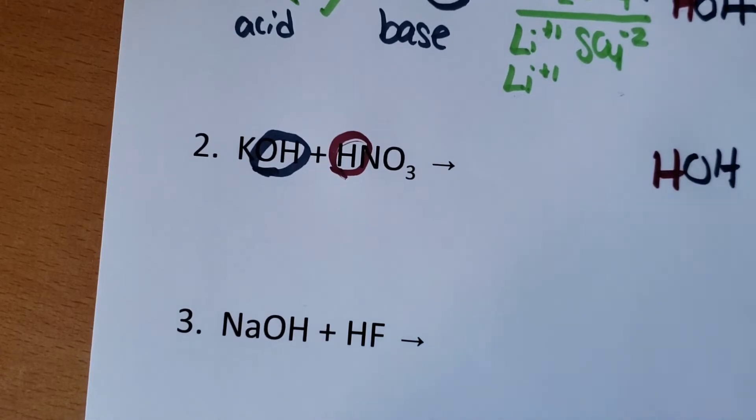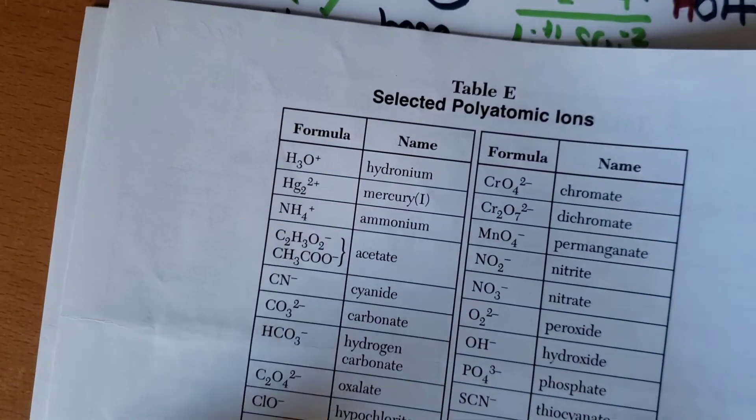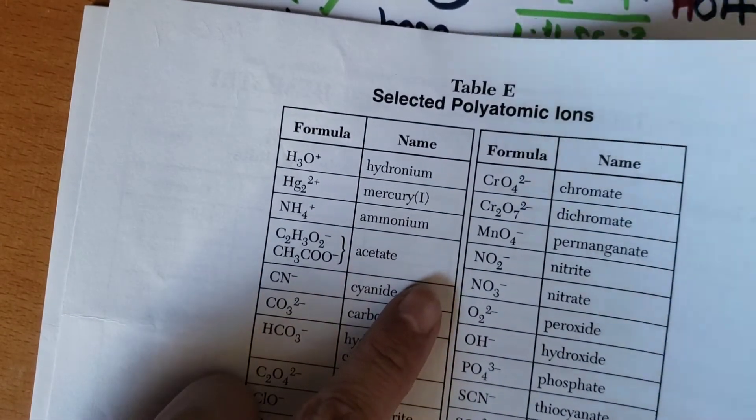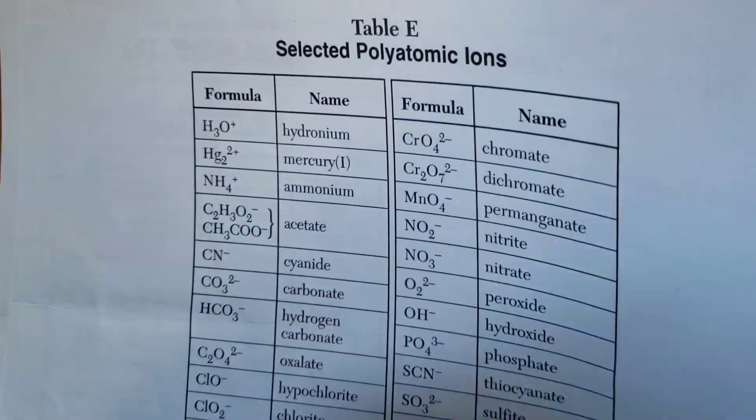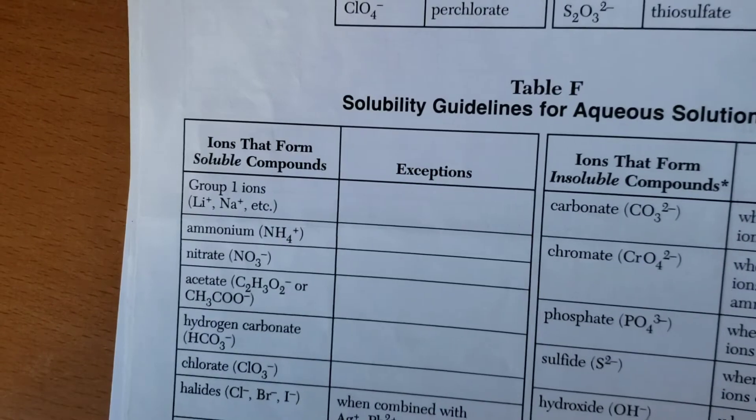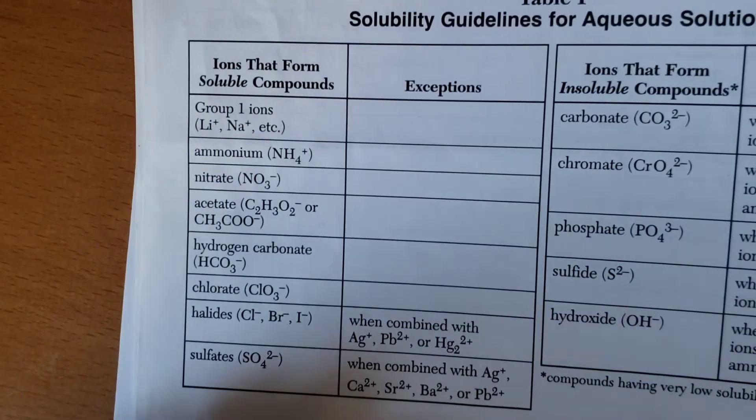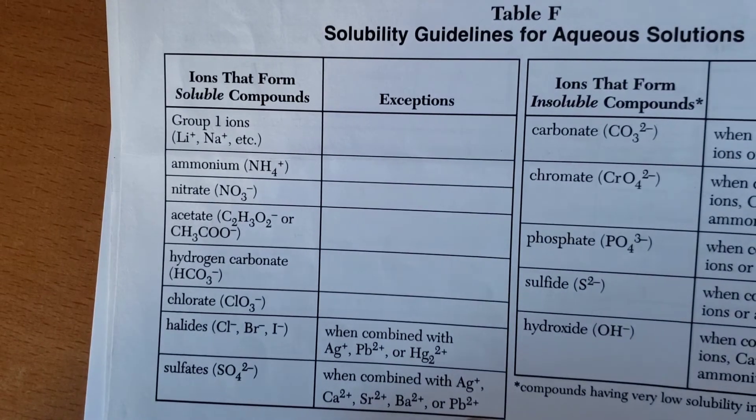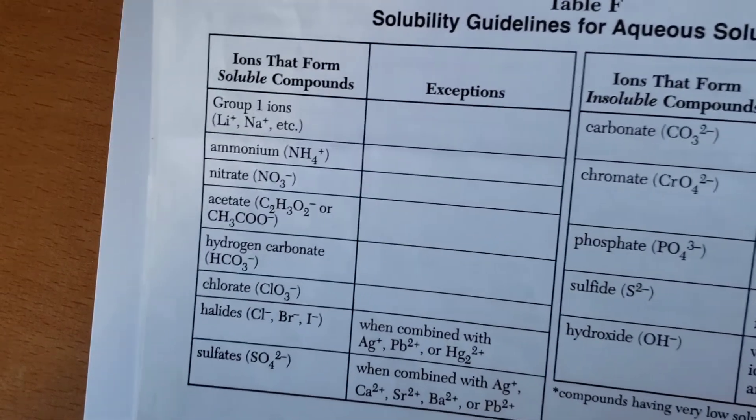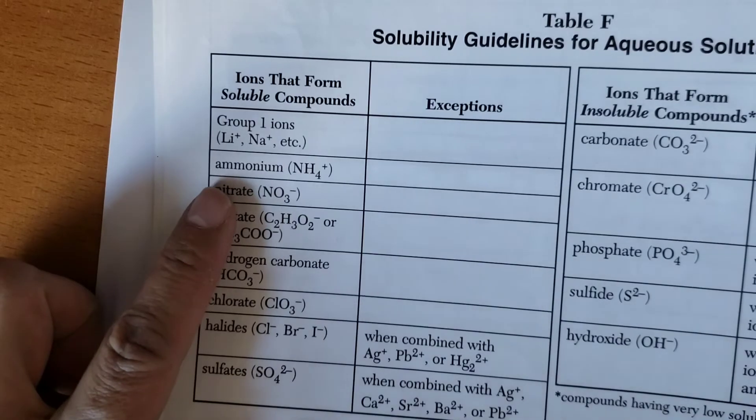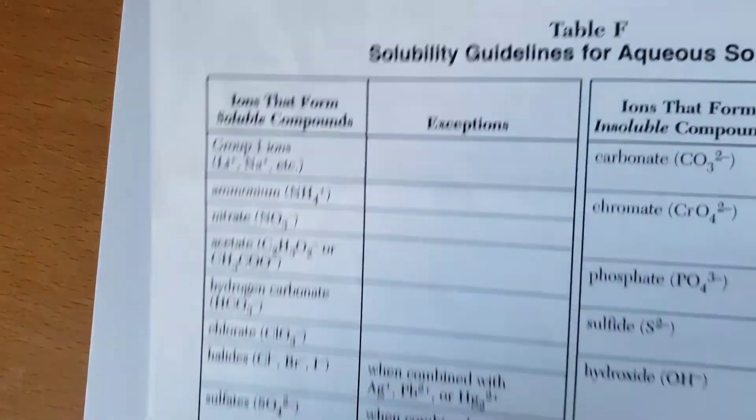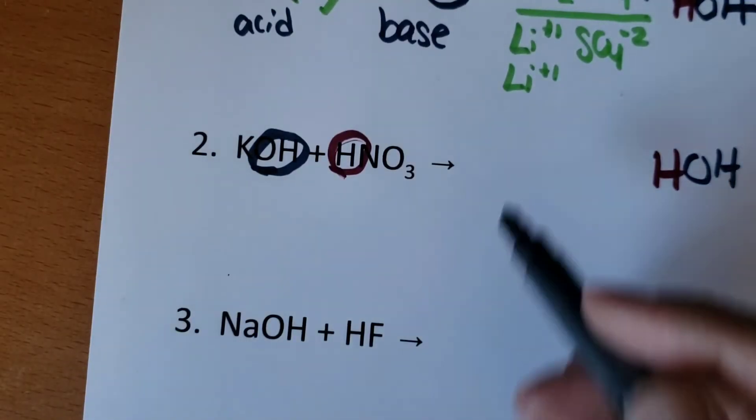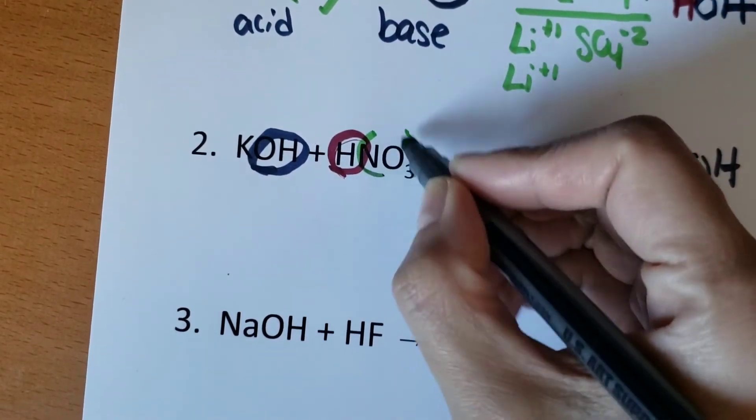Remember, you can find the polyatomic ions on reference table E. Here you can see I have nitrate. You can also find the polyatomic ions used in acids and bases in reference table F. So both places are good places to look. And here we can see nitrate. I like how in table F they put it in parentheses. So nitrate has a charge of minus one.